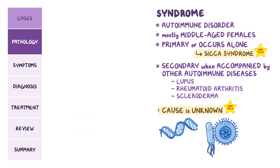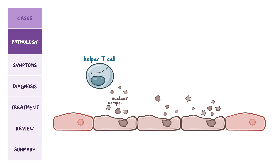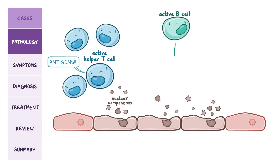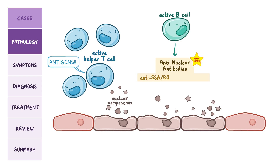In Sjogren's syndrome, some helper T-cells perceive nuclear components that leak out of dead or damaged cells in the body as antigens. These T-cells become active and proliferate, and then activate B-cells, which start producing anti-nuclear antibodies, or ANAs, against the nuclear antigens. A high-yield fact to remember is that the two types of ANA formed in Sjogren's syndrome are anti-SSA-Rho and anti-SSB-La antibodies, which are formed against ribonuclear proteins SSA and SSB.